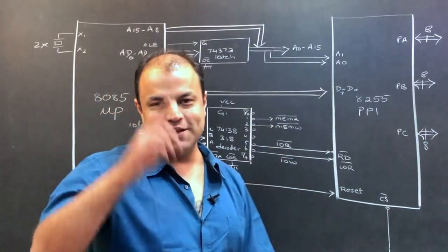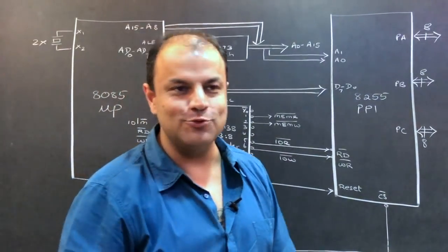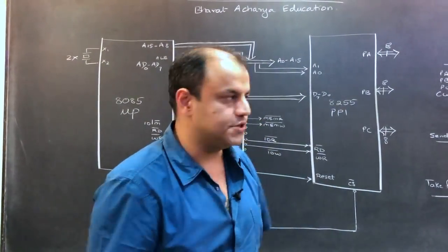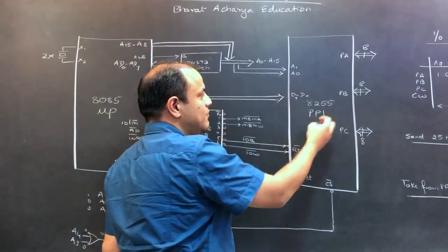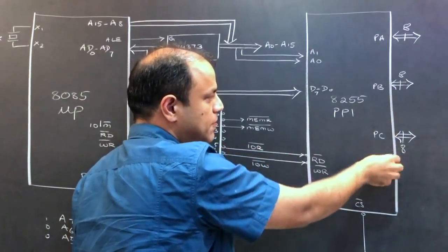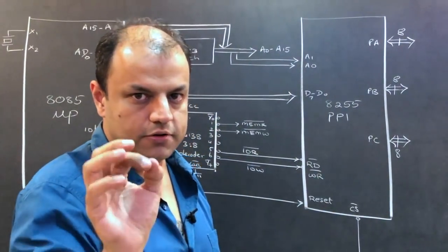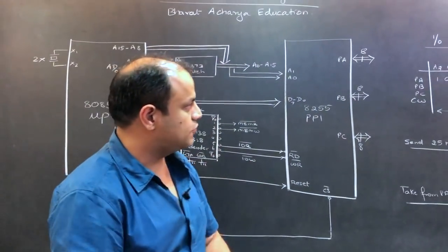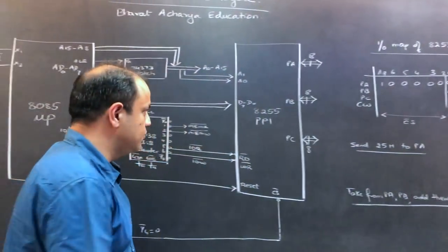A0 and A1. Now, if you've seen the architecture video, you know what these two lines do. These two lines are used for internal selection. A1, A0 will decide whether port A will be selected or port B or port C or the control word. So that's the reason why you need it. So based on that, you'll be making the IO map. Of course, we'll go into details. I'm just telling you right now.